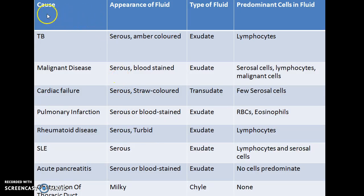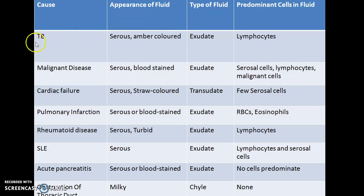This is a comprehensive table giving the cause of pleural effusion, appearance of fluid, type of fluid, and predominant cells. In TB, the fluid will be serous and amber colored — it is exudative and lymphocytes predominate. In malignant disease, the fluid will be serous and blood-stained, exudative, with predominant serous cells, lymphocytes, and malignant cells.